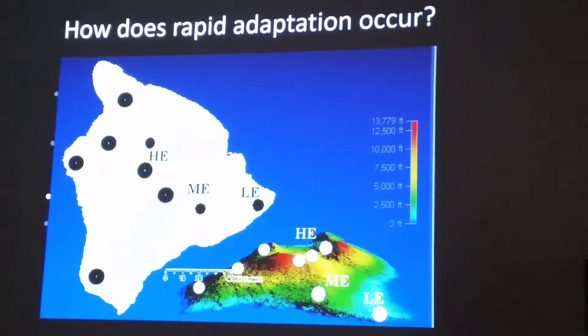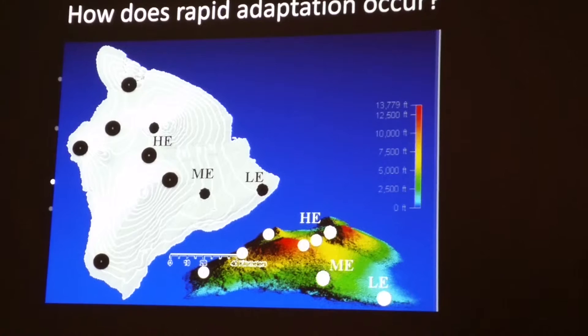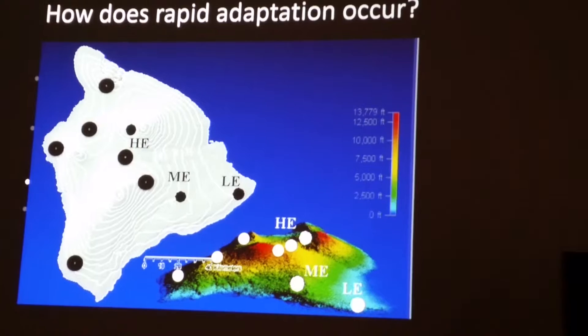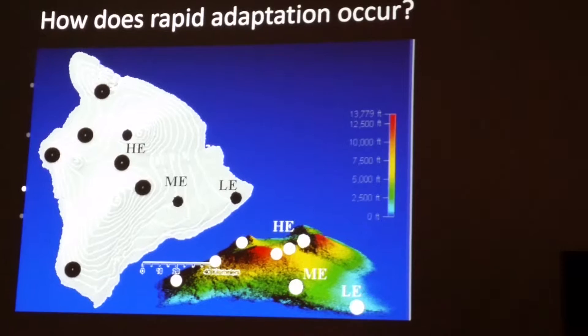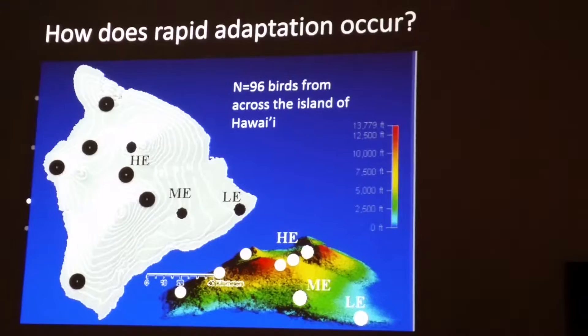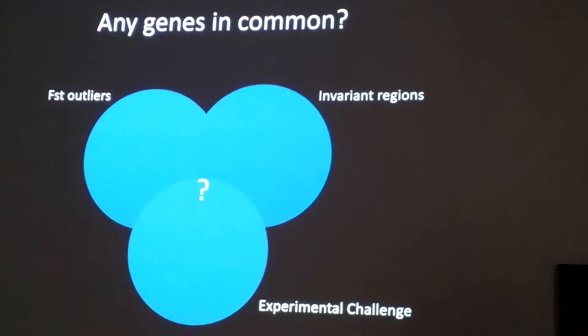We've sampled from 14 populations across the island of Hawaii along elevational gradients. I'm going to be comparing low elevation with high elevation birds, ignoring the mid-elevation. The way I define low and high elevation is whether mosquitoes are present: low elevations have mosquitoes present and the birds have evolved in the presence of Plasmodium, whereas at high elevations there are no mosquitoes and no malaria. This is 96 birds across 14 populations. We're looking for genes that are important across spatial, temporal, and experimental scales.